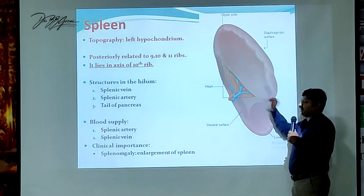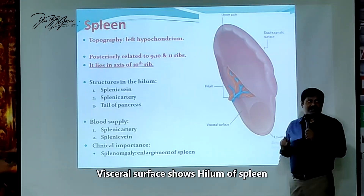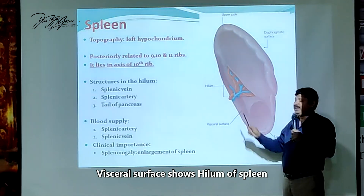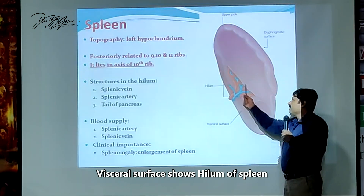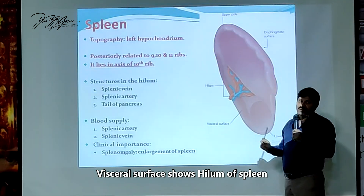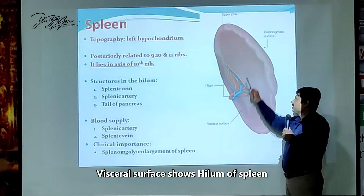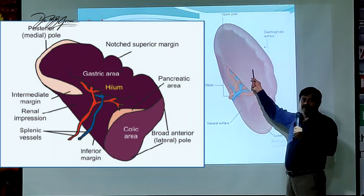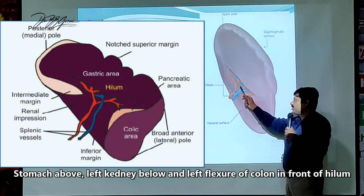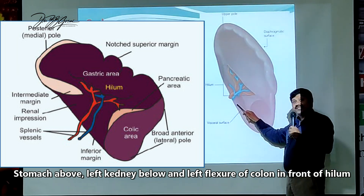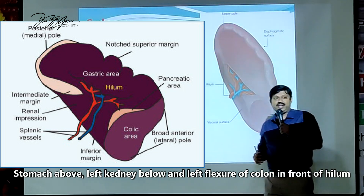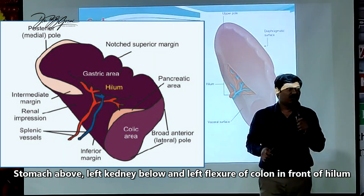This visceral surface has a hilar region. Just like you have a hilum, this is a splenic hilum. This splenic hilum is the visceral surface. It is related to the stomach above, it is related to the left kidney, and on the right side is the left flexure of the colon.